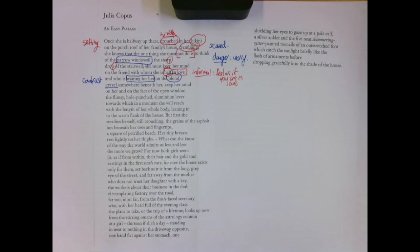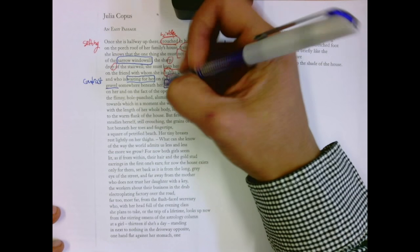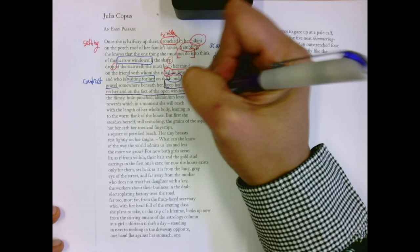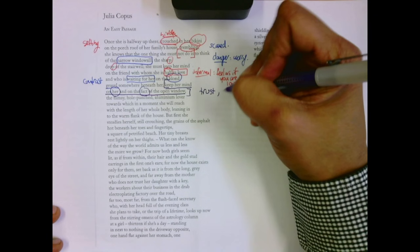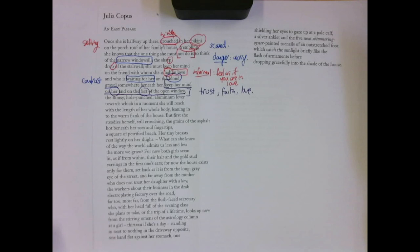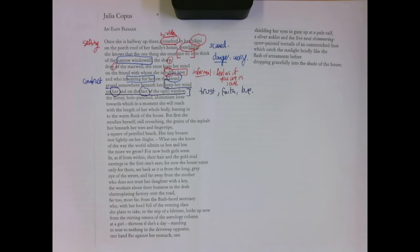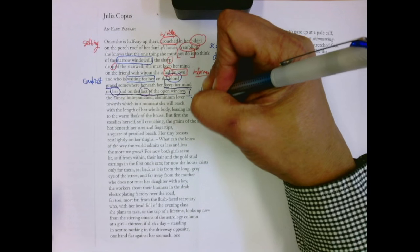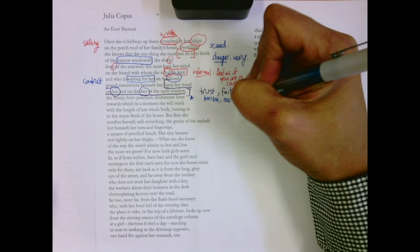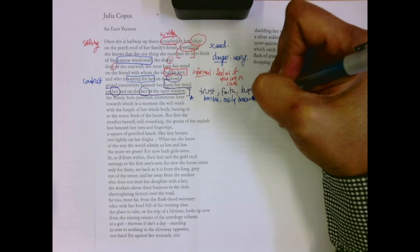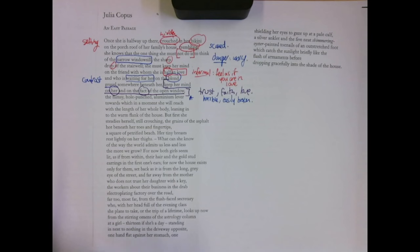Keep her mind on her and on the fact of the open window. So this is what the speaker needs to focus on. There is an open window and her trust, faith, and love in her friend. And again, we get that contrast. Here again, we come back to the flimsy, hole-punched aluminum lever towards which, in a moment, she will reach with the length of her whole body. There again, we get this horrible, like, almost easily broken object that contrasts with the beauty.